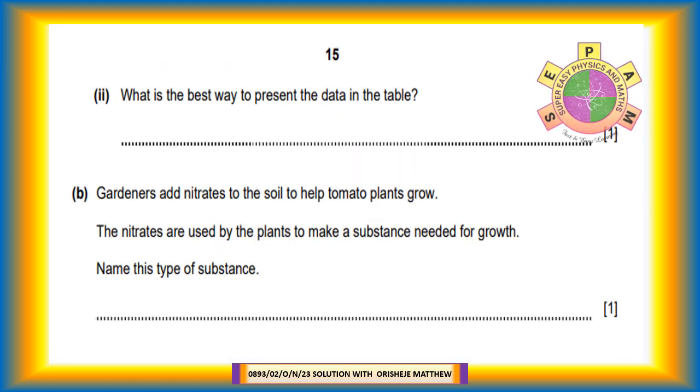Question 14a continued: What is the best way to present the data in the table? The data can be represented with bar chart, histogram or frequency polygon. Question 14b: Gardeners add nitrates to the soil to help tomato plants grow. The nitrates are used by the plants to make a substance needed for growth. Name this type of substance. Nitrates are used by plants to make protein.